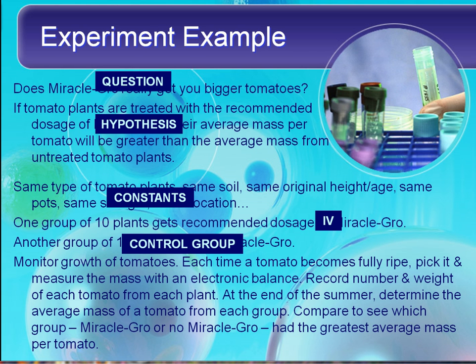During the experiment, we monitor for the growth of the tomatoes. Each time a tomato becomes fully ripe, we pick it and measure the mass on an electronic balance. We record the number and weight of each tomato from each plant, and at the end of the summer, determine the average mass of the tomato from each group. We compare to see which group — Miracle-Gro or non-Miracle-Gro — had the greatest average mass per tomato. This greatest average mass per tomato is the dependent variable. I often think of the IV as the cause and the DV as the effect, the result.